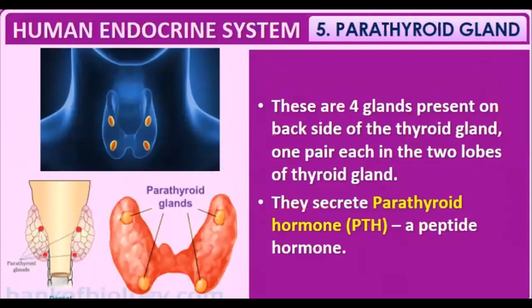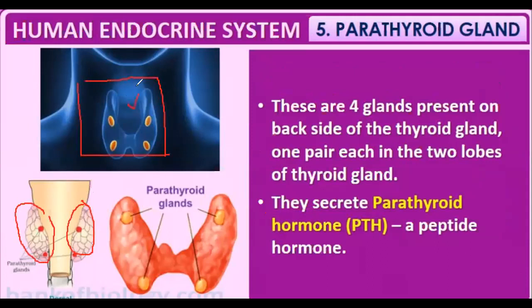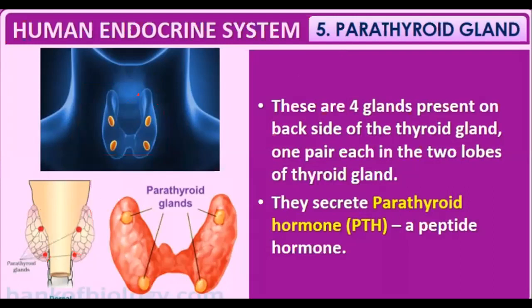Next we learn about the parathyroid gland. The parathyroid glands are located on the para position — the back side — of the thyroid gland, which sits on the trachea or windpipe. The thyroid gland has two lobes, right and left, and on the back of these lobes, four small parathyroid glands are present. The thyroid is the largest gland; the parathyroid glands are comparatively much smaller.